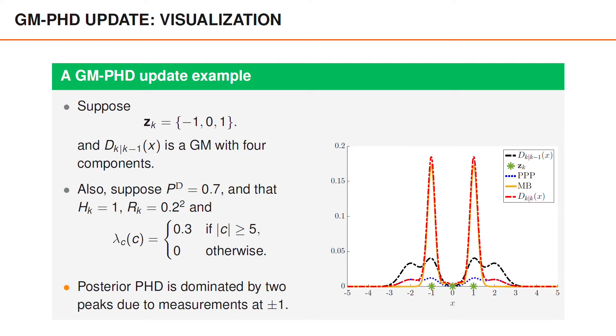However, we also see that we have smaller peaks around minus 2 and 2, corresponding to potential objects that are undetected.